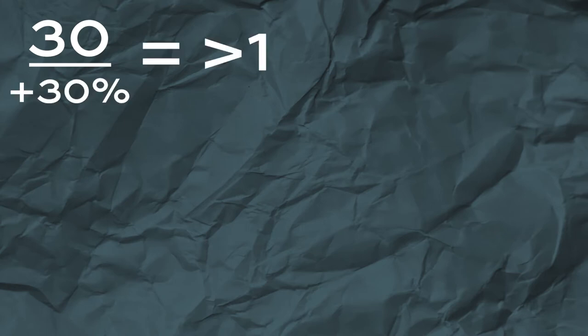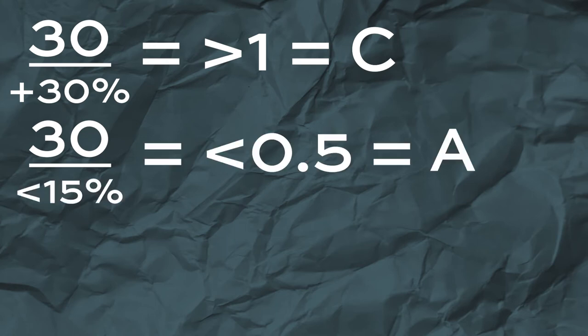You don't actually need to whip out a calculator on clinic - it's really simple maths. If the patient is 30 and you have more than 30% bone loss, the ratio is more than 1 and that's grade C. If that same 30-year-old had bone loss of 15%, that would be grade A, and if it's anything in between, then it would be grade B.